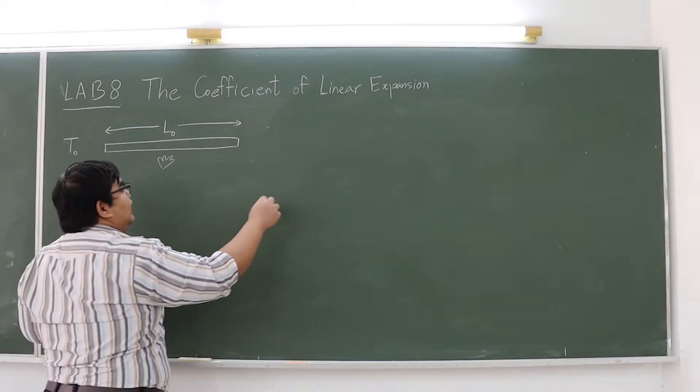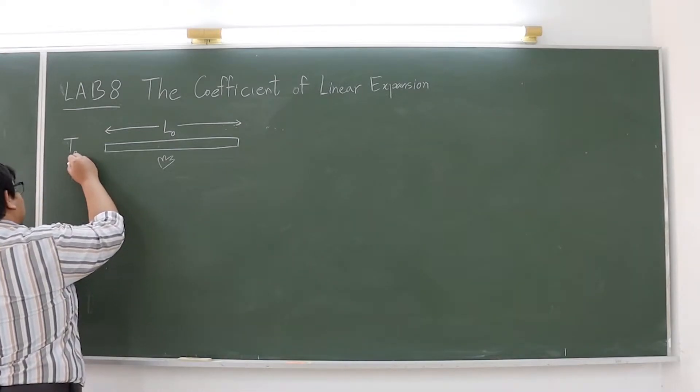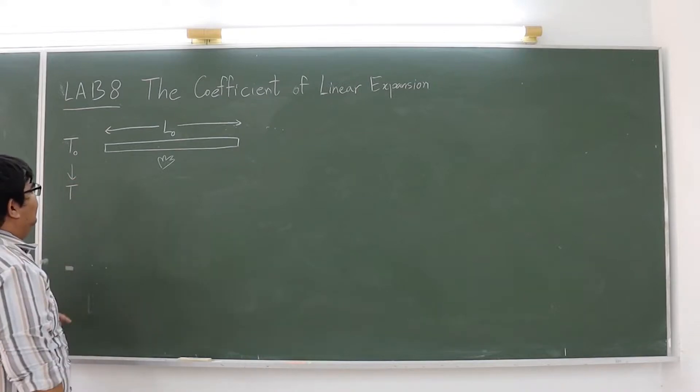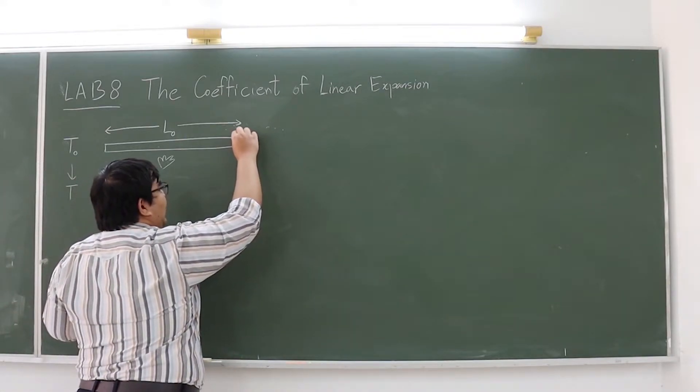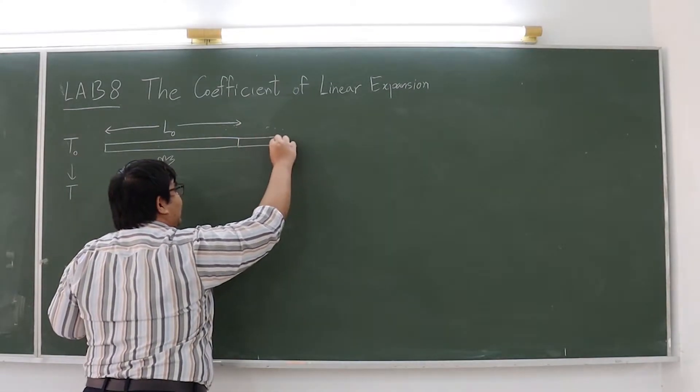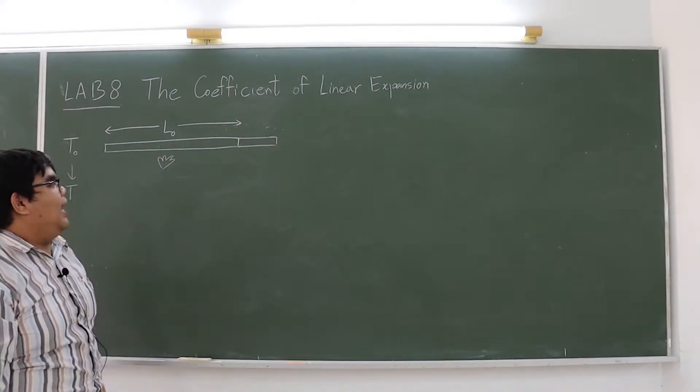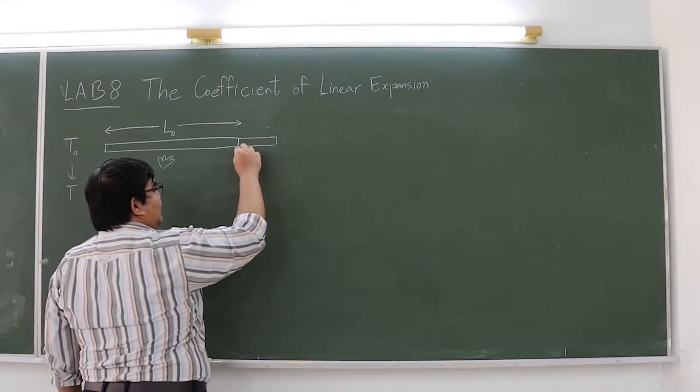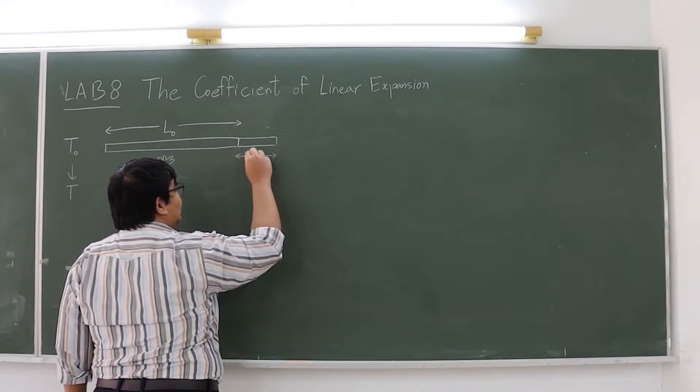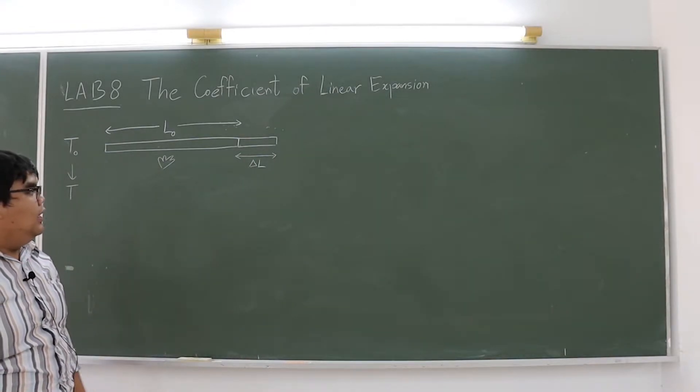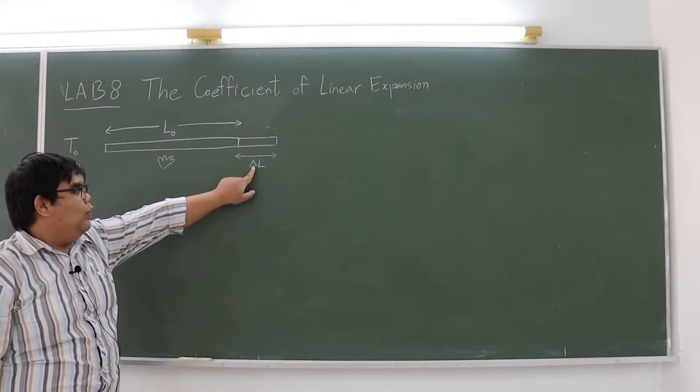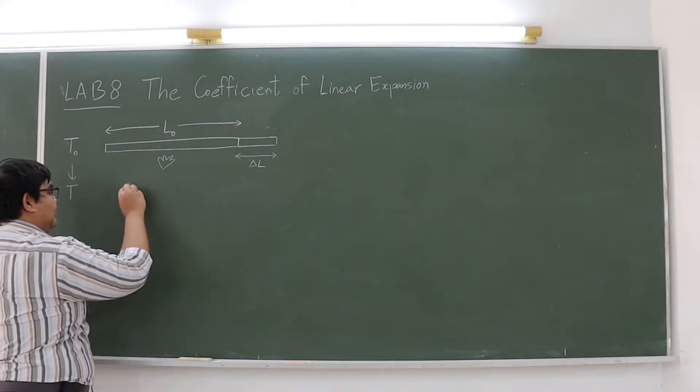We will find that the metal stick will spread out. Assume that it spreads out a length delta L. We will find that this delta L depends on two things.